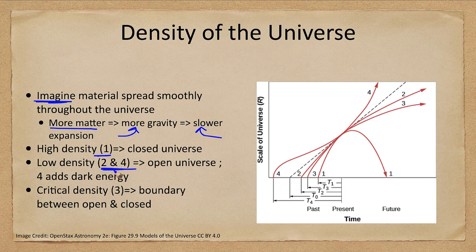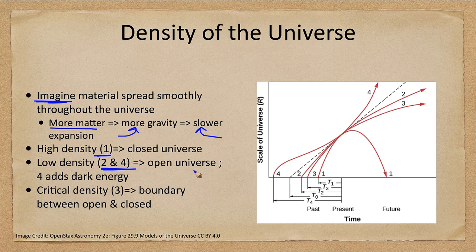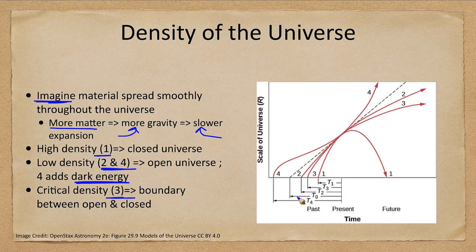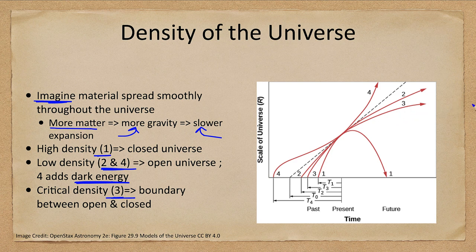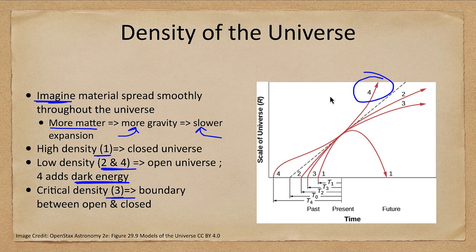Lines two and four are an open universe where the universe continues to expand forever. In line two, it expands but it's speeding up. That is where the dark energy comes in. The critical density number three is the boundary between open and closed. So it expands, but it just barely keeps expanding. And the particles are moving fast enough to just reach an infinite distance before they are stopped. So you have these four models. And again, where does it look like we are? It looks like the universe is accelerating, and that would be model four here, where the universe gets larger and larger over time.